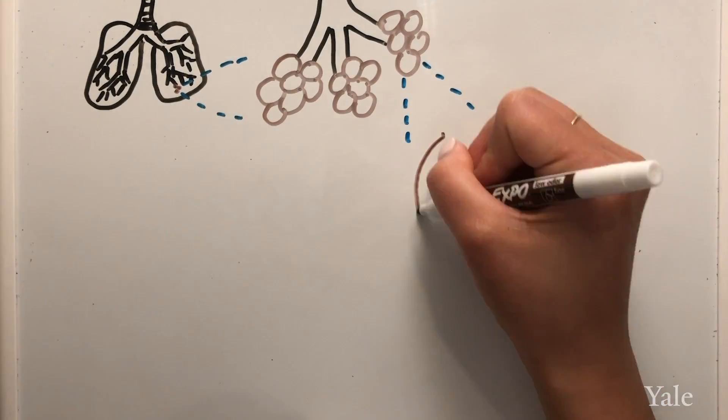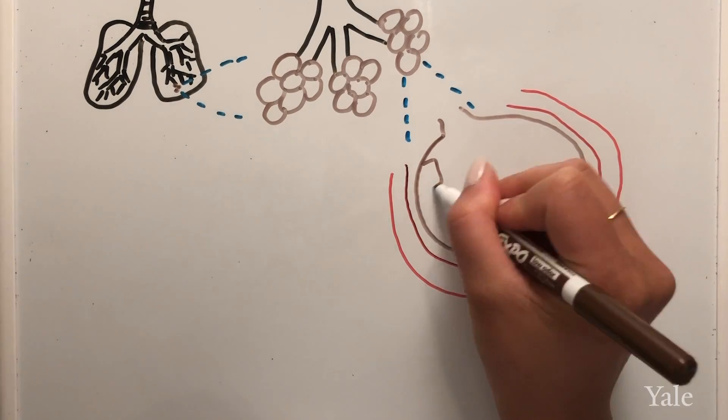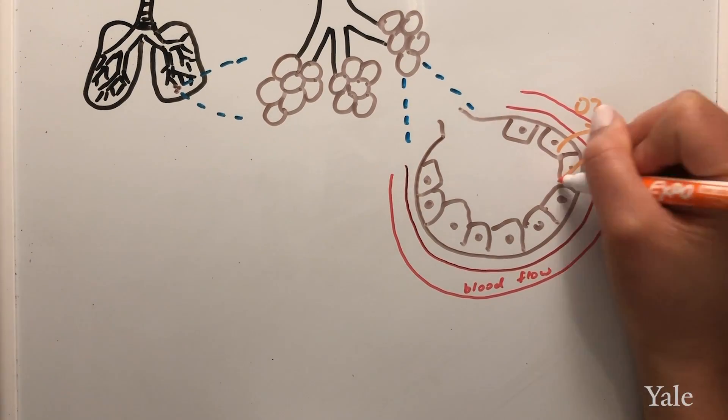Alveoli are air sacs in the lungs where gas exchange between O2 and CO2 occurs.